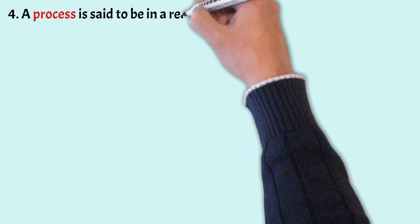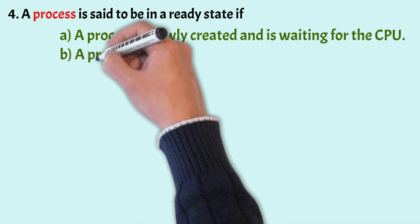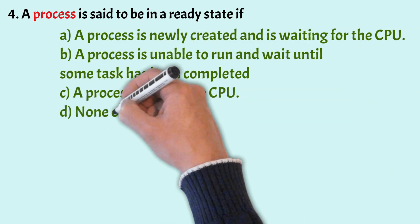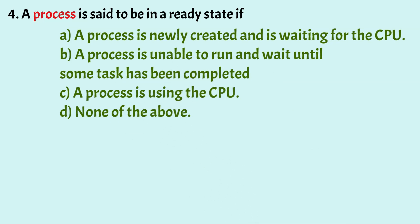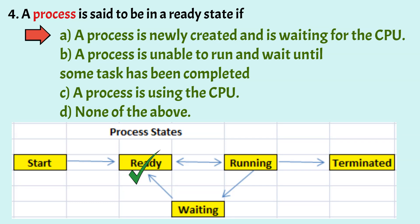A process is said to be in ready state if: a process is newly created and waiting for the CPU; a process is unable to run and waits until some task has been completed; a process is using the CPU; or none of the above. The correct answer is Option A — a process is newly created and waiting for the CPU. When a process is unable to run because it is waiting for another task, it is in the wait or block state. When a process is using the CPU, it is in the running state.